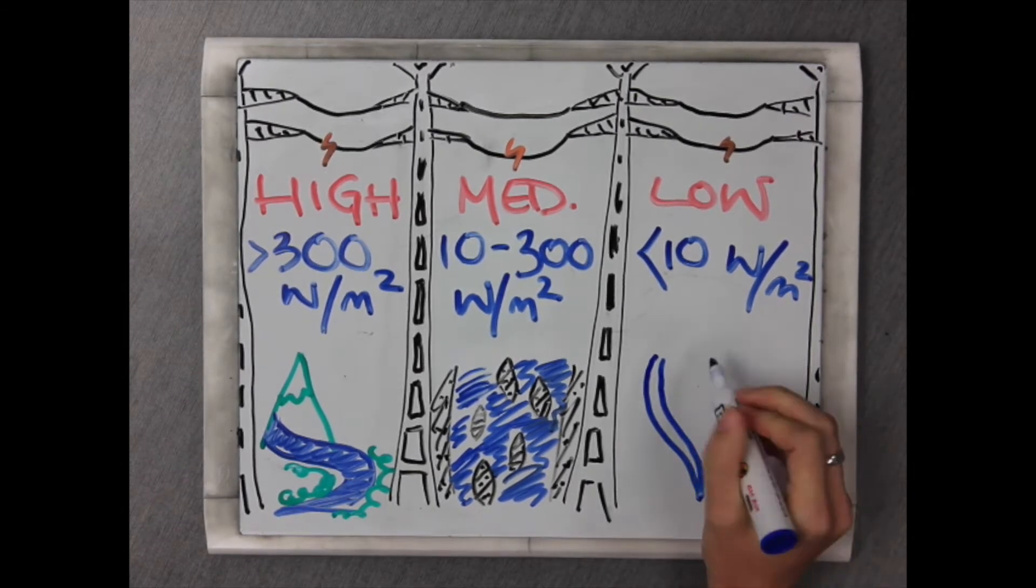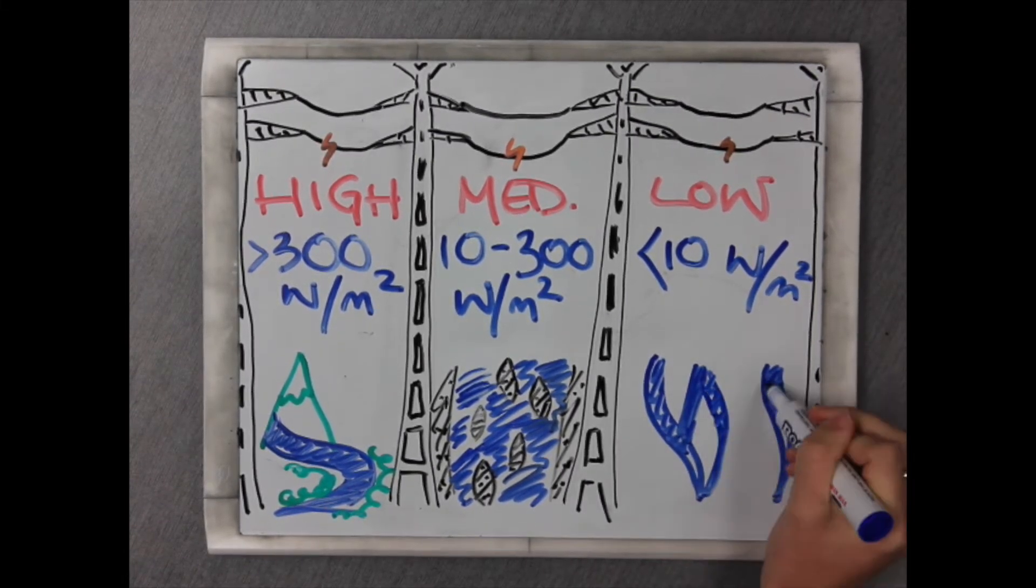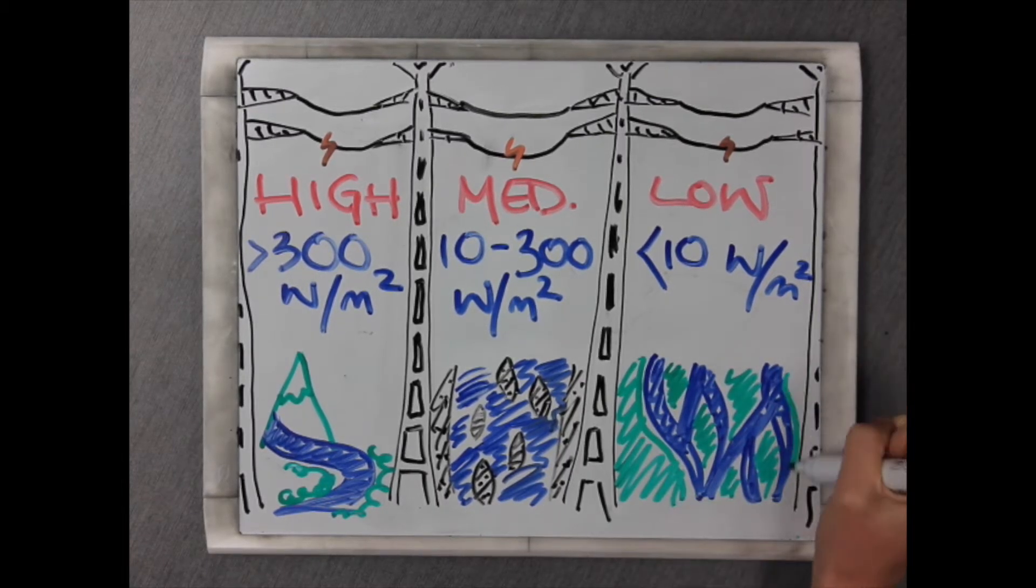Anastomosing rivers are the main type within the low energy category, with an energy of under 10 watts per meter squared.